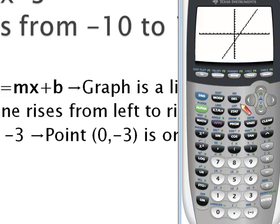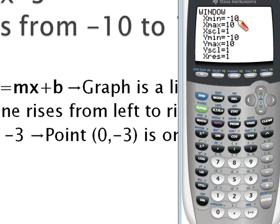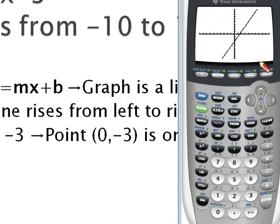Note that the standard window has me travel from negative 10 to positive 10 on the x-axis and negative 10 to positive 10 on the y-axis. And we count by units of 1. And if I press window, you'll see we're going to travel from negative 10 to 10 counting by 1's and negative 10 to 10 counting by 1's again on both the x and y-axis. Click graph to get back to our graph.